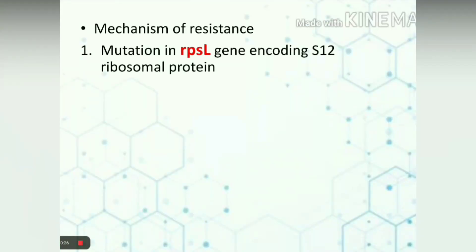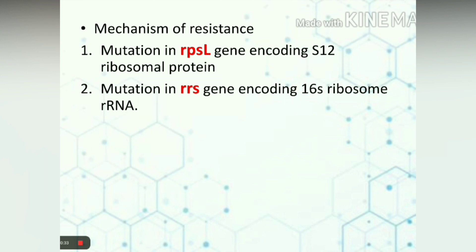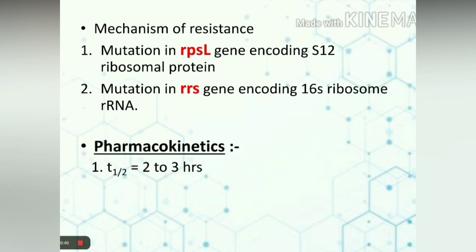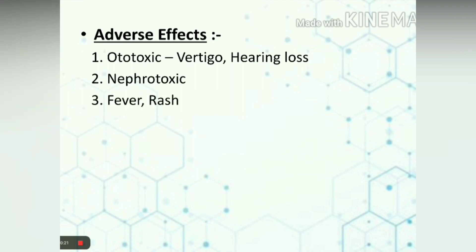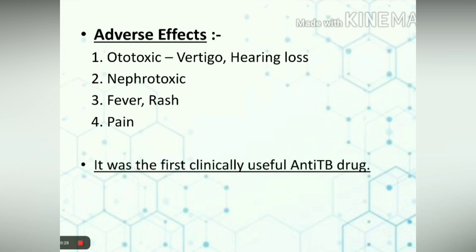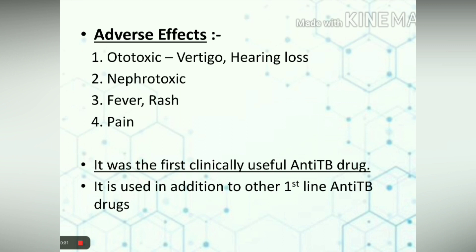Mechanism of resistance: mutation in the rpsL gene encoding the S12 ribosomal protein, and mutation in the rrs gene encoding the 16S ribosomal rRNA, which is the binding site for streptomycin. Pharmacokinetics: its half-life is 2 to 3 hours and it is excreted by the kidney. Adverse effects include ototoxicity, which leads to vertigo and hearing loss — this vestibular dysfunction is irreversible. Therefore, it is relatively contraindicated during pregnancy as it might cause deafness in the newborn. Other adverse effects include nephrotoxicity, fever, rash, and pain at the site of injection. It was the first clinically useful anti-TB drug and is used in addition to other first-line anti-TB drugs.